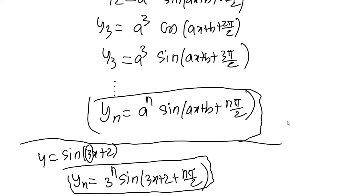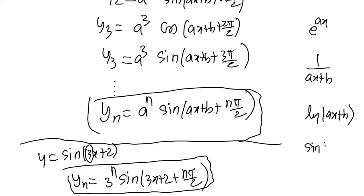So the nth derivative formulas: exponential e^(ax) gives a^n · e^(ax); 1/(ax+b) and log(ax+b) and sin(ax+b) formulas — we have covered all. Please practice. Friends, share this video. Any doubts, put them in the comment section. This video shows basic differential calculus concepts. Thank you.